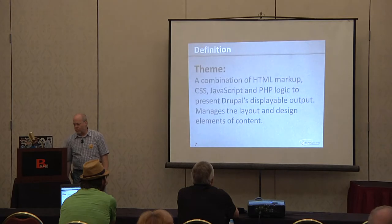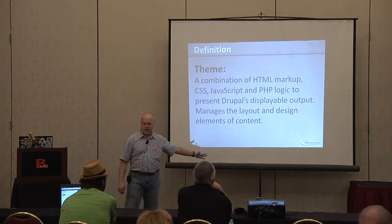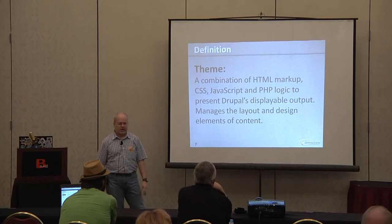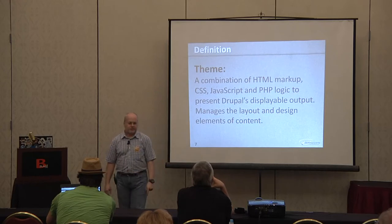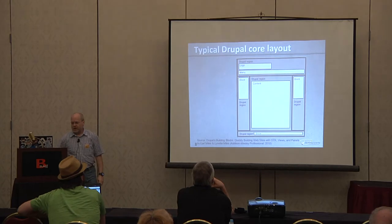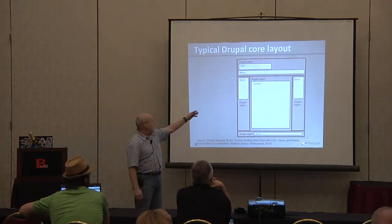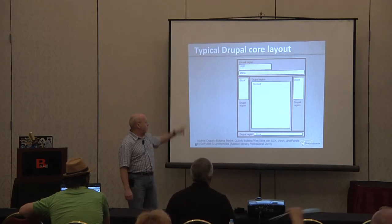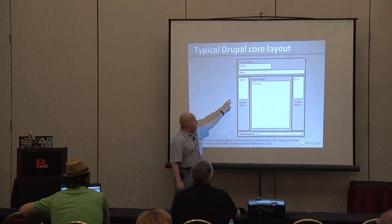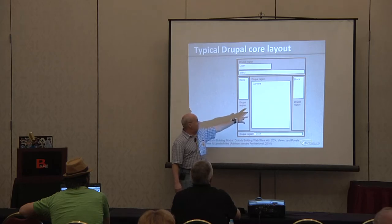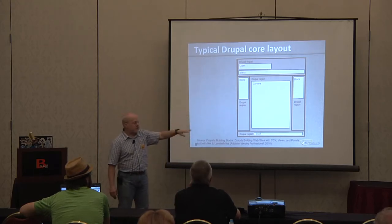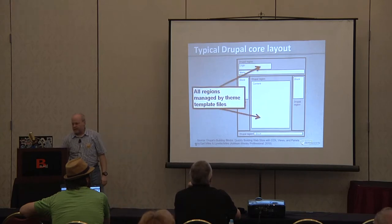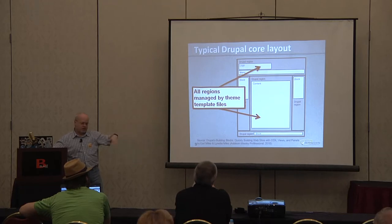A lot of that is being done at the theme layer. The theme is a combination of things, but it manages the layout and design elements of content — that's its sole purpose. In a typical Drupal site you'll see content blocks, a menu, a logo. Some of that is managed by the block system, some comes from the content output of a node or views, and a typical theme has specific calls to menus and logos. All of that output is controlled in terms of layout by the theme.